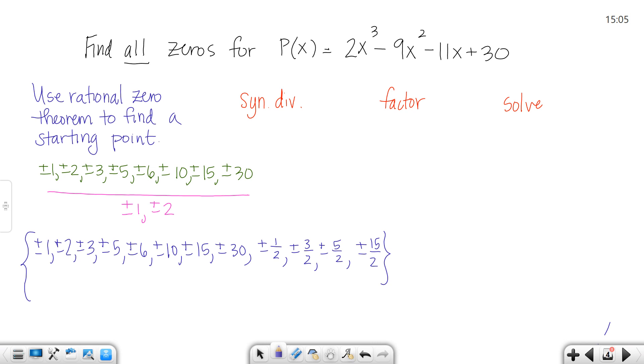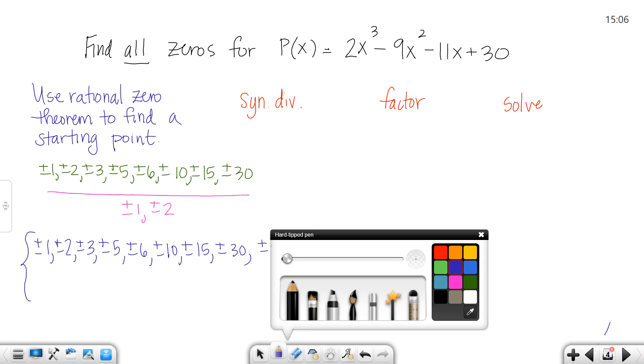The reason we made this list is we don't want to start with something that won't work. For example, 7 wouldn't work. 7 is not a possible zero, so I wouldn't want to waste my time trying 7. We're going to go through this list and keep using synthetic division until we find a number that works.